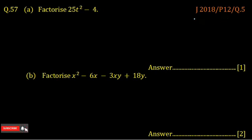Question number 5, paper 1, Marion 2, June 2018. Factorize 25t square minus 4.